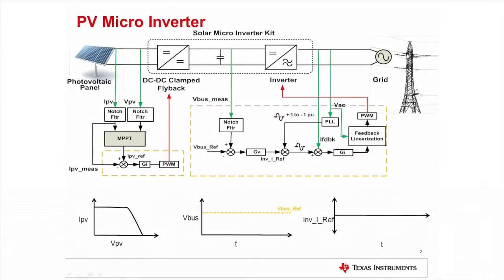A solar micro-inverter is an equipment that takes energy from the photovoltaic or the PV panel and feeds it into the grid. This is achieved typically with the help of a DC-DC and a DC-AC stage.